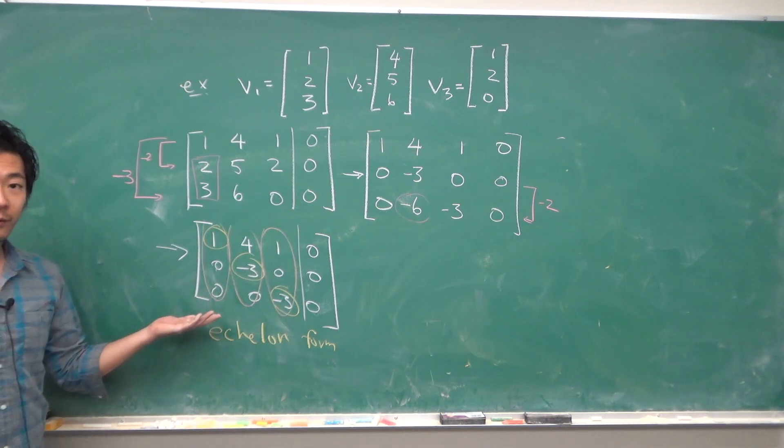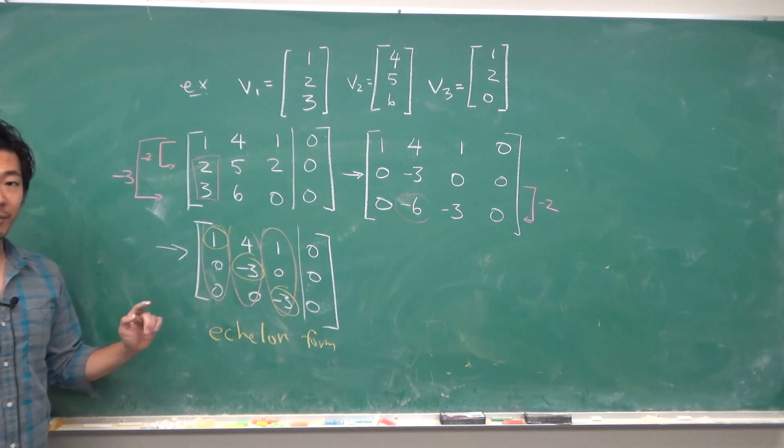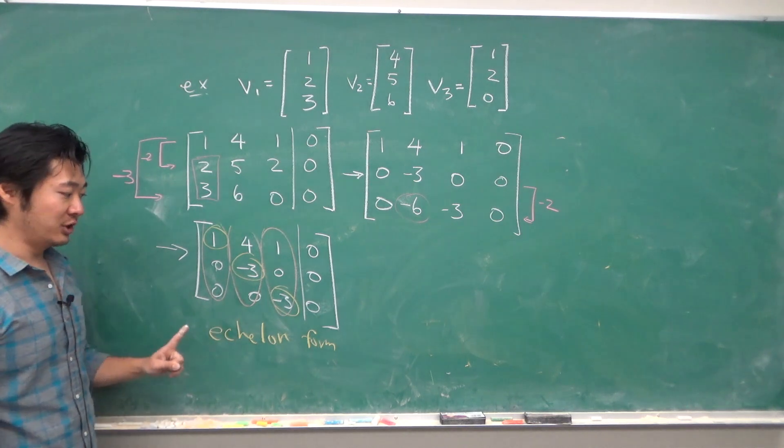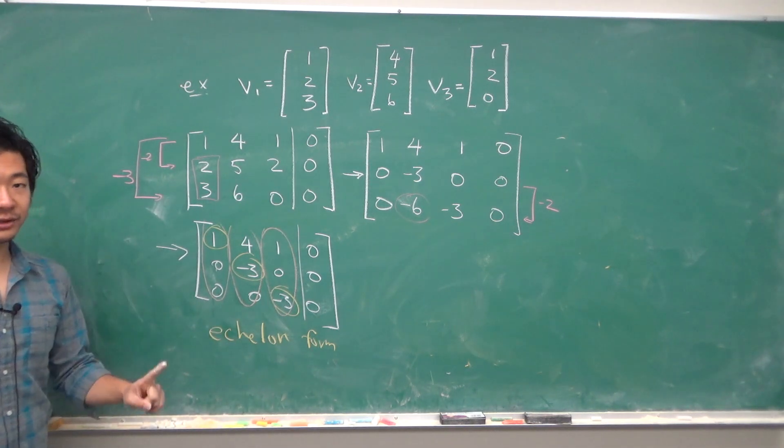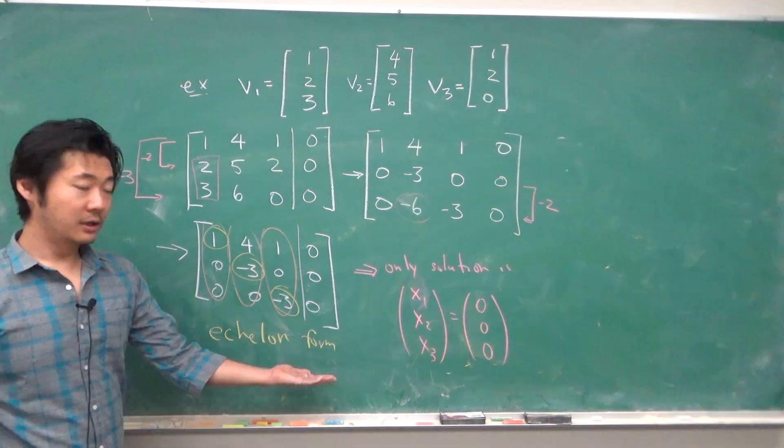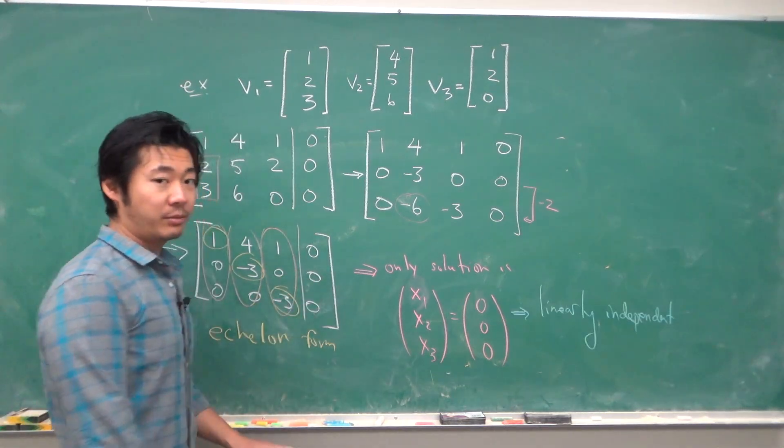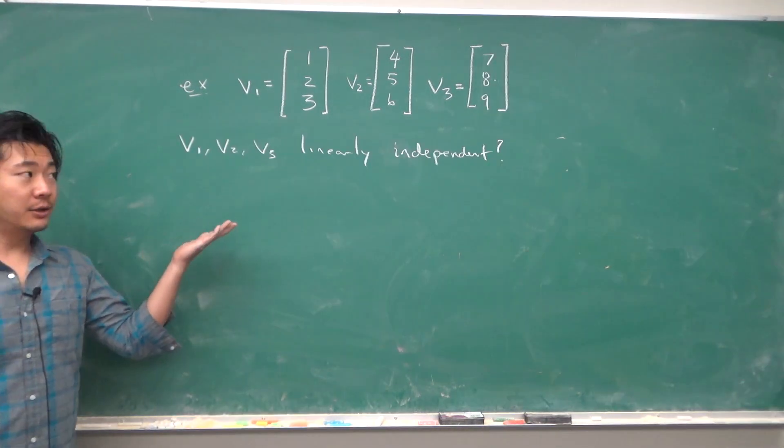We notice that every column is a pivot column, so there are no free variables. There must be one unique solution, and the one unique solution to the homogeneous problem is 0,0,0. So the vectors must be linearly independent.